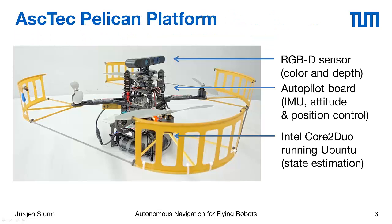This is our platform in more detail. You can see it's a quadrotor with 4 rotors. It has an autopilot board in the middle that does attitude control and contains the IMU. On top we have mounted an RGBD camera. The Pelikan platform can carry up to 600 grams of additional payload, so you can add more sensors as you wish. We decided to add an RGBD camera, similar to Microsoft Kinect, just a little bit more lightweight.